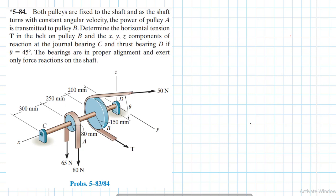Hello, welcome everyone. The problem reads: both pulleys are fixed to the shaft, and as the shaft turns with a constant angular velocity, the power of pulley A is transmitted to pulley B. Determine the horizontal tension T in the belt on pulley B and the X, Y, Z components of reaction at the journal bearing C and the thrust bearing D, if theta equals 45 degrees. The bearings are in proper alignment and exert only force reactions on the shaft.